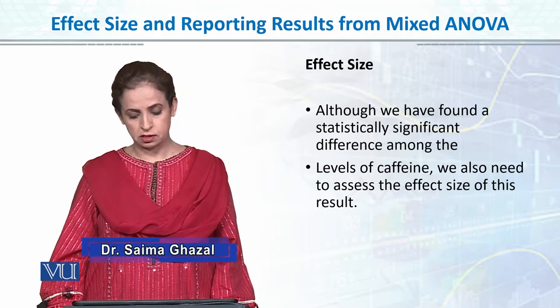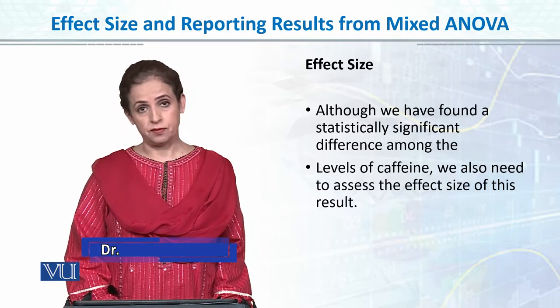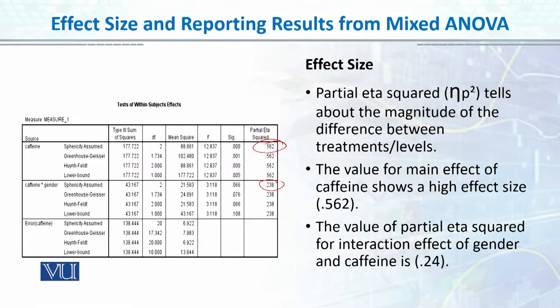Although we have found a significant difference among the levels of caffeine, we also need to assess the effect size. The partial eta square tells about the magnitude of the difference between treatment levels. The value for the main effect of caffeine shows a high effect size — 0.562 — whereas the partial eta square for the caffeine and gender interaction effect is 0.23, which is quite low.